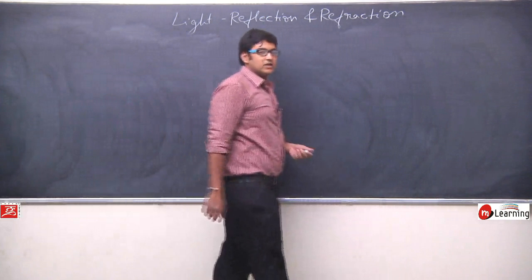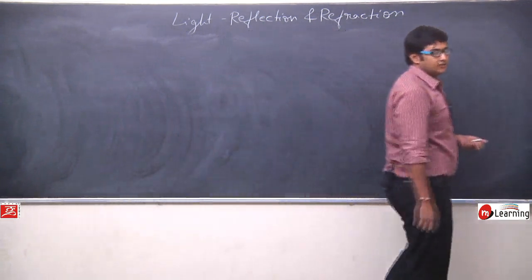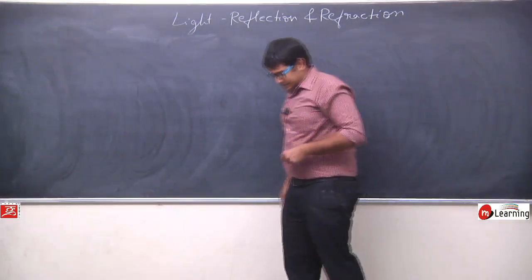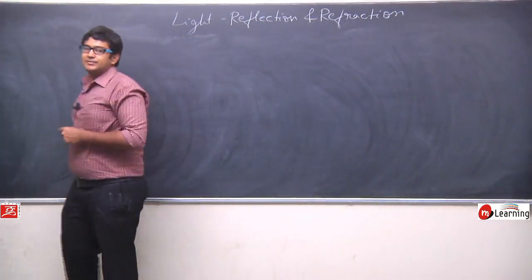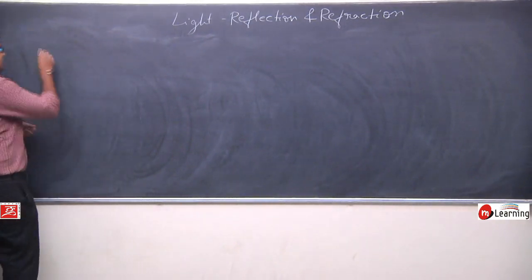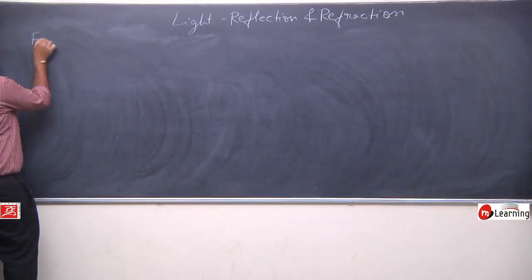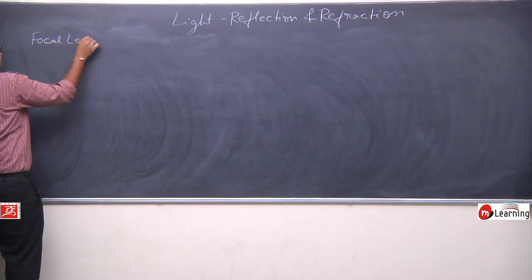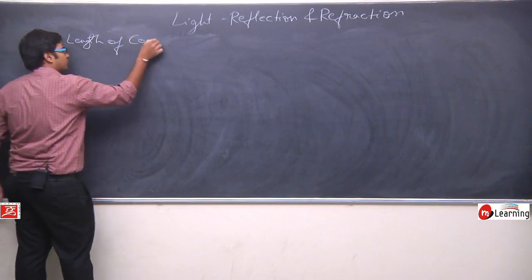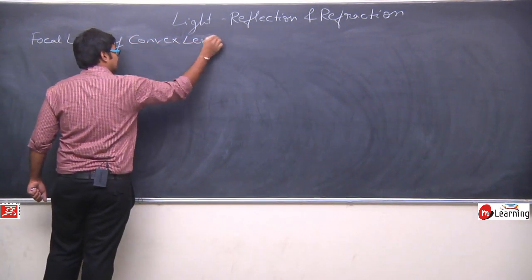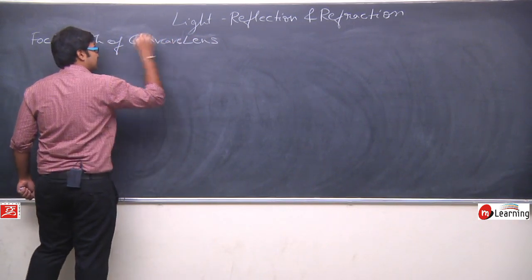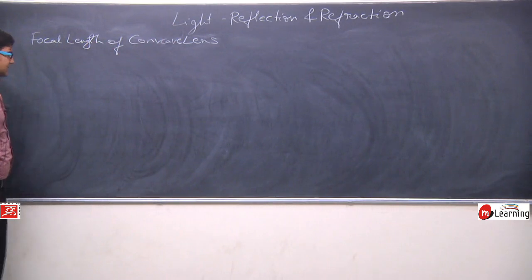We have defined the focal length, first principle focus and second principle focus for a convex lens. Ab chaliye dekhte hain ki concave lens mein aisa kya difference hai, yeh alag kyun hota hai. So we will define focal length of concave lens. Concave lens mein antar kya hota hai, hum usse samajhne ki koshish karte hain.